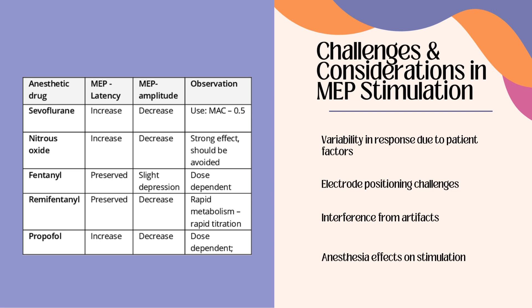Lastly, anesthesia can have effects on stimulation. A chart is included here of various anesthetic drugs and their effects on MEP latency and amplitude. For example, sevoflurane increases latency and decreases amplitude. Nitrous oxide increases latency and decreases amplitude. Fentanyl and remifentanil, because they are delivered differently, have preserved latency effects and slight depression on MEP amplitude, and a decrease on MEP amplitude, respectively. Propofol, which is commonly used, increases effects on latency and decreases effects on amplitude, and should be used in dose-dependent circumstances. Notably, nitrous oxide should be avoided due to its strong effect on MEPs.